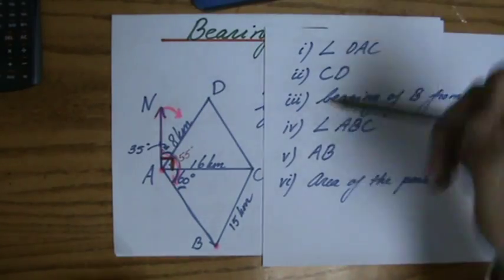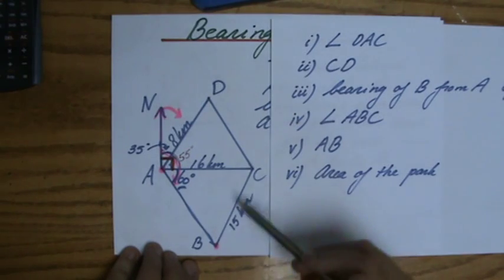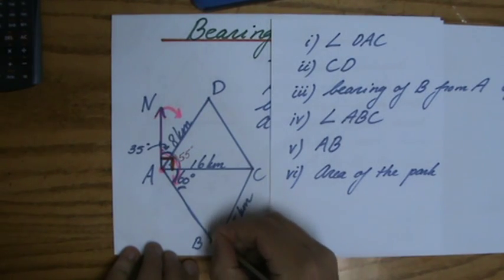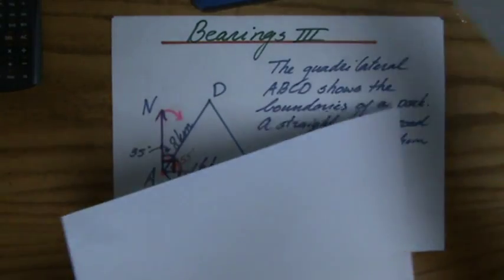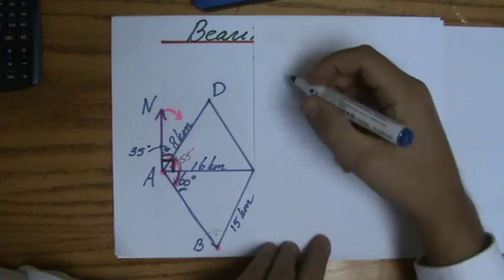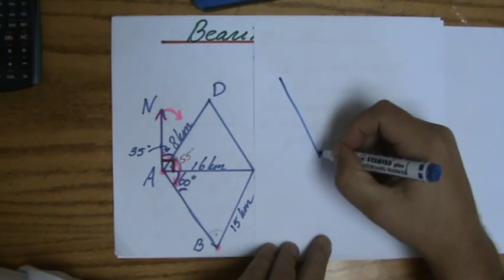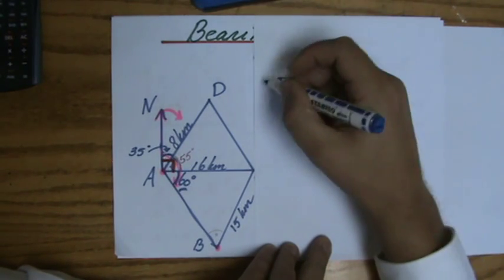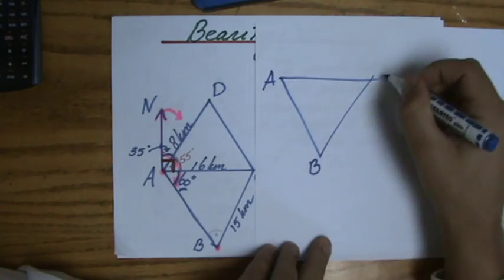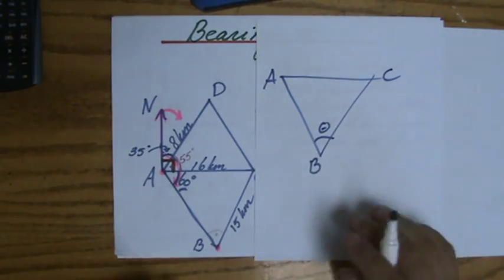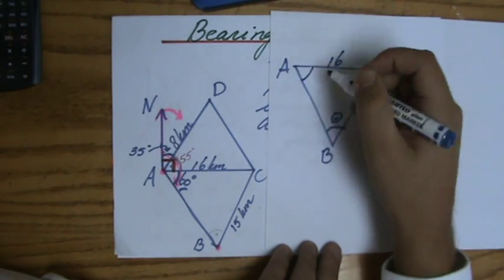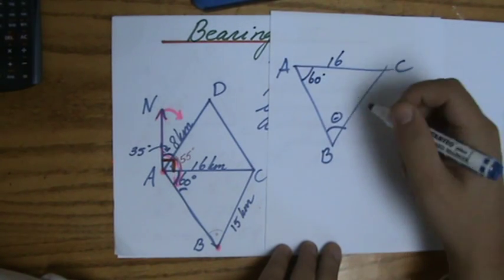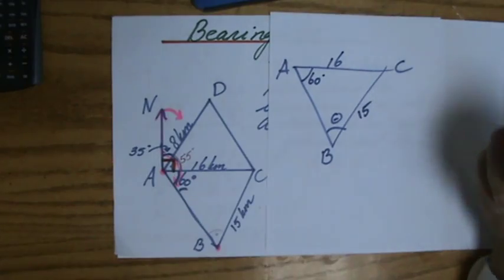Let's have a look. Angle ABC. So we're talking about the angle over here. I'm going to take a separate piece of paper again because there's so much information there. So this ABC. Let's put theta there. We know this one is 16. We know this one is 60 degrees. And that one is 15.